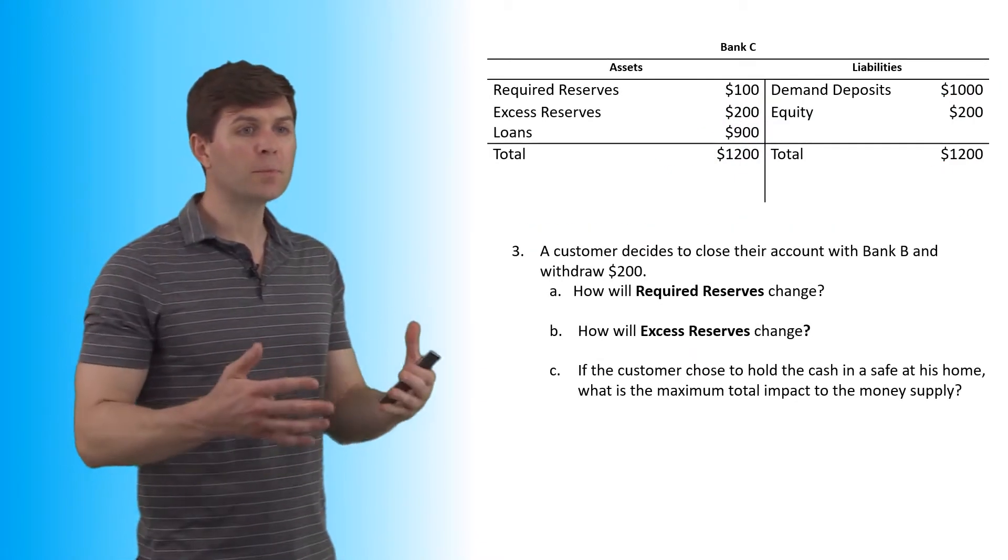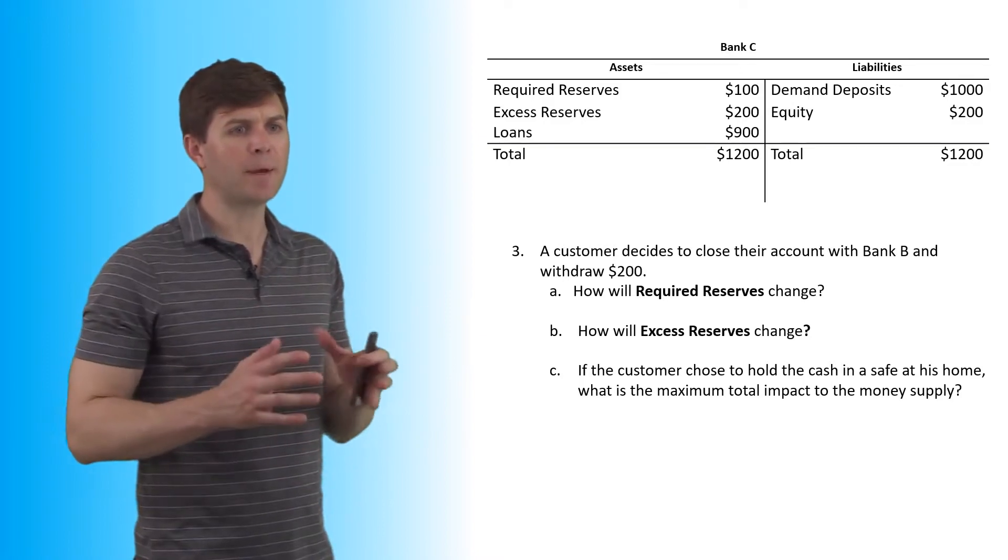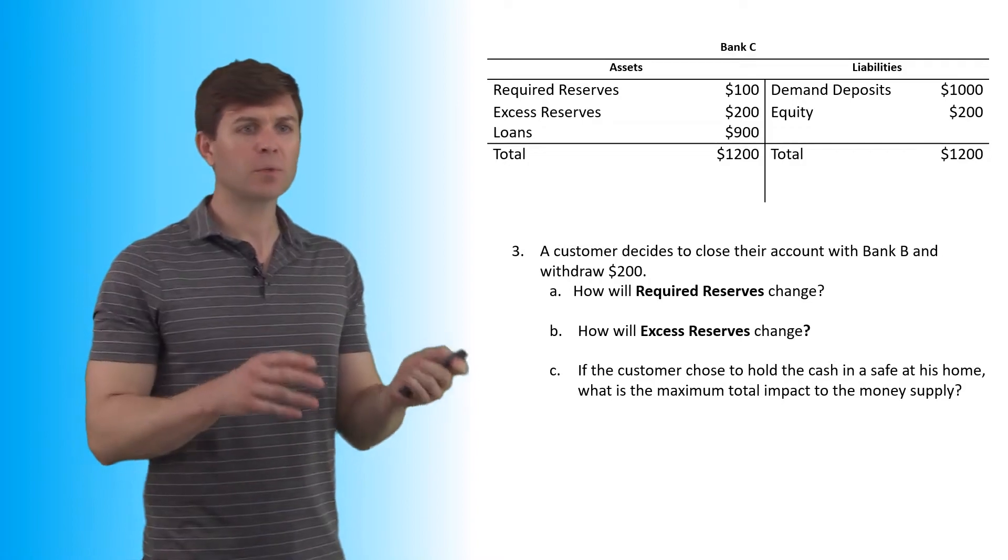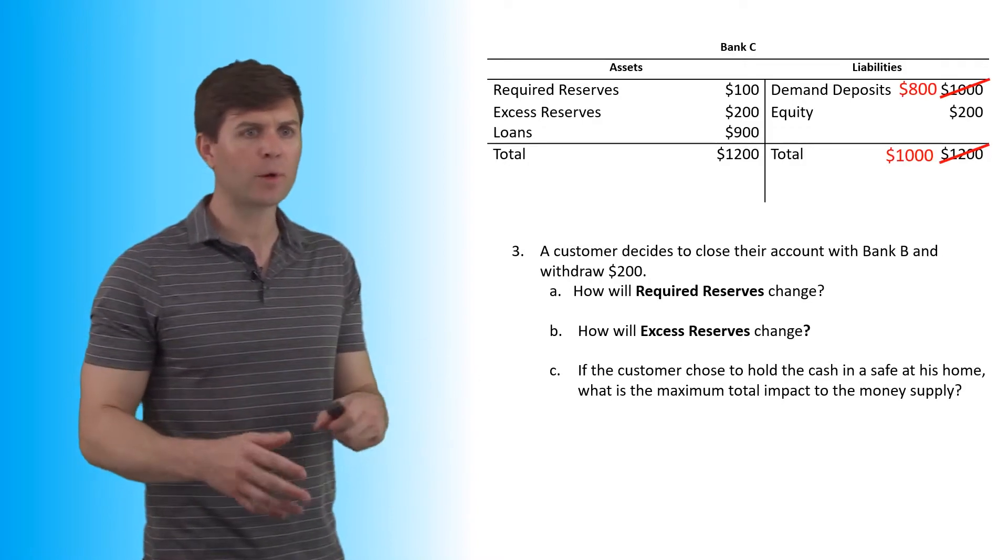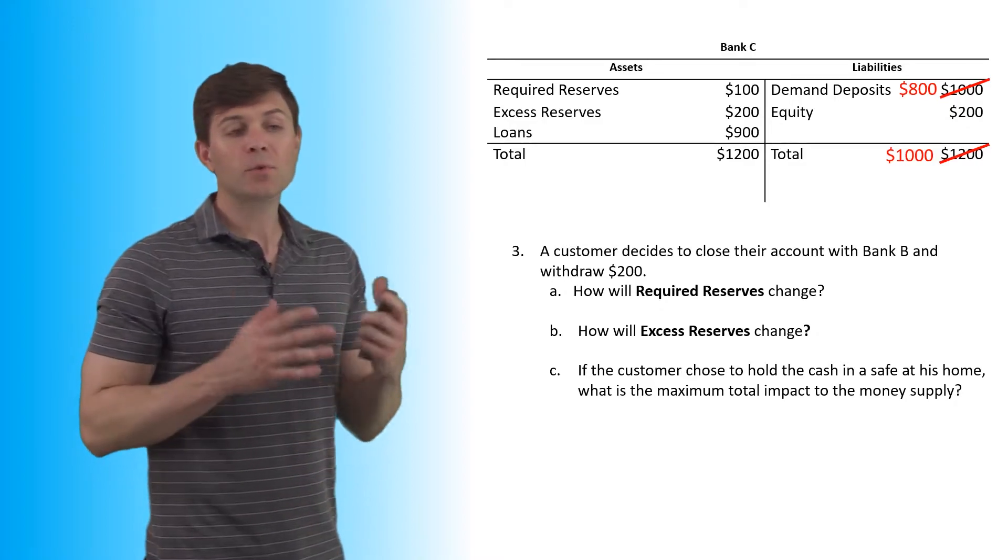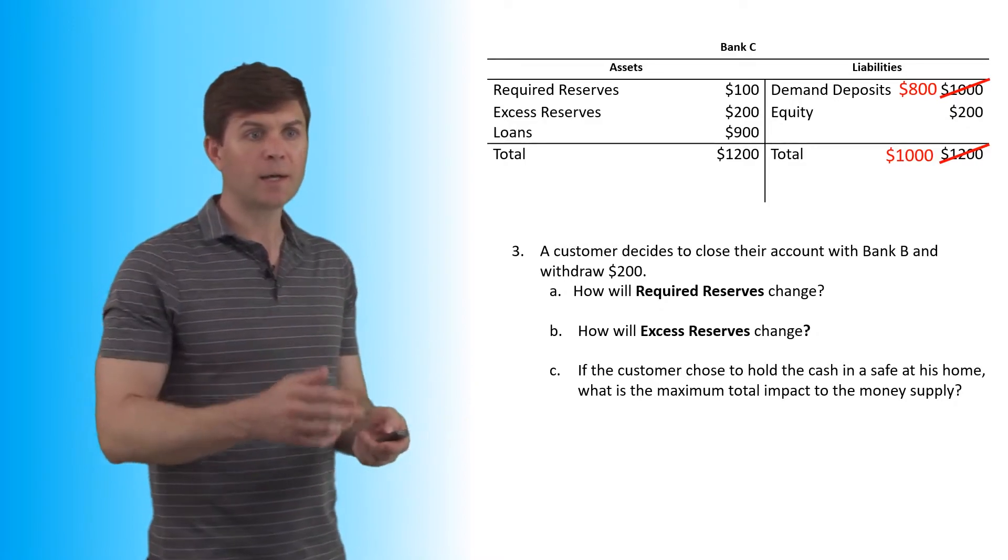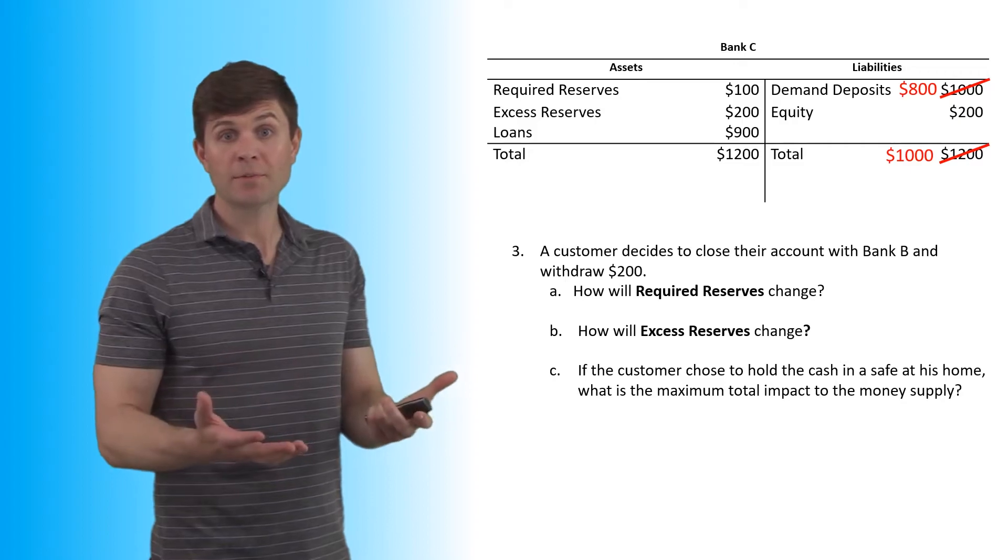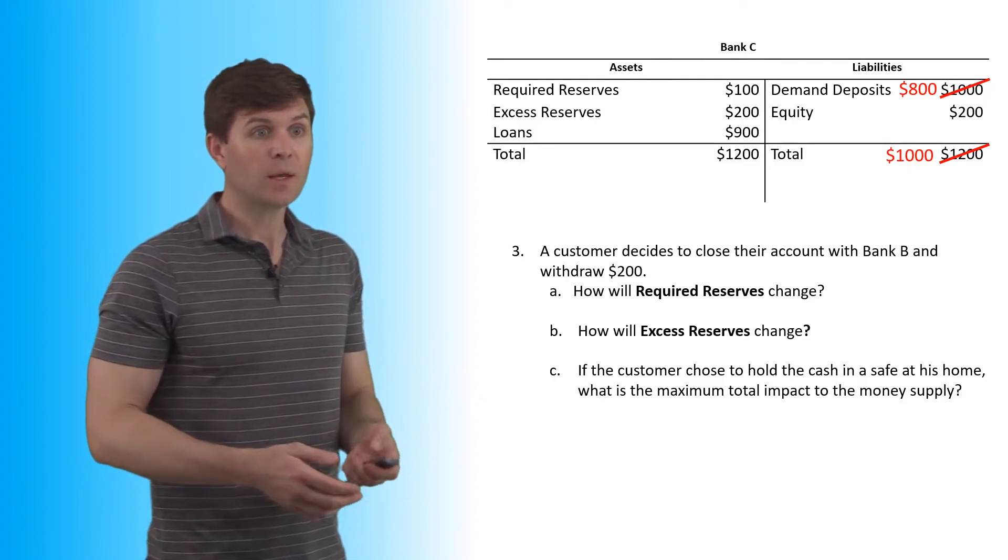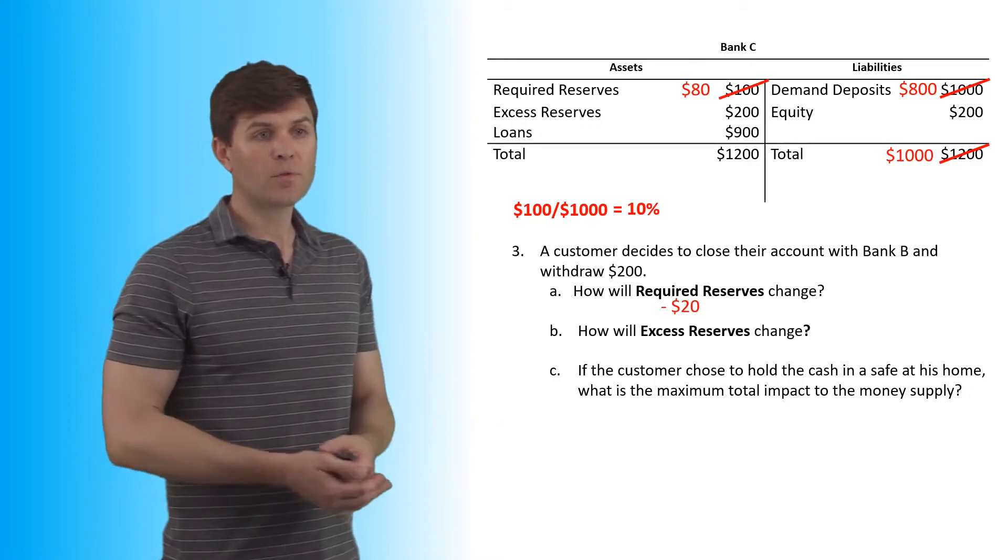All right, number three, a customer decides to close their account with Bank C and withdraw $200. Okay, so in this case, we're going to take $200 away from the demand deposits right away, which takes $200 away from the liabilities column completely. So how will required reserves change? We had $100 in there before. Now we have to take away 20% of what was just taken out. So we have a 10% reserve requirement here. We're going to lose $20.